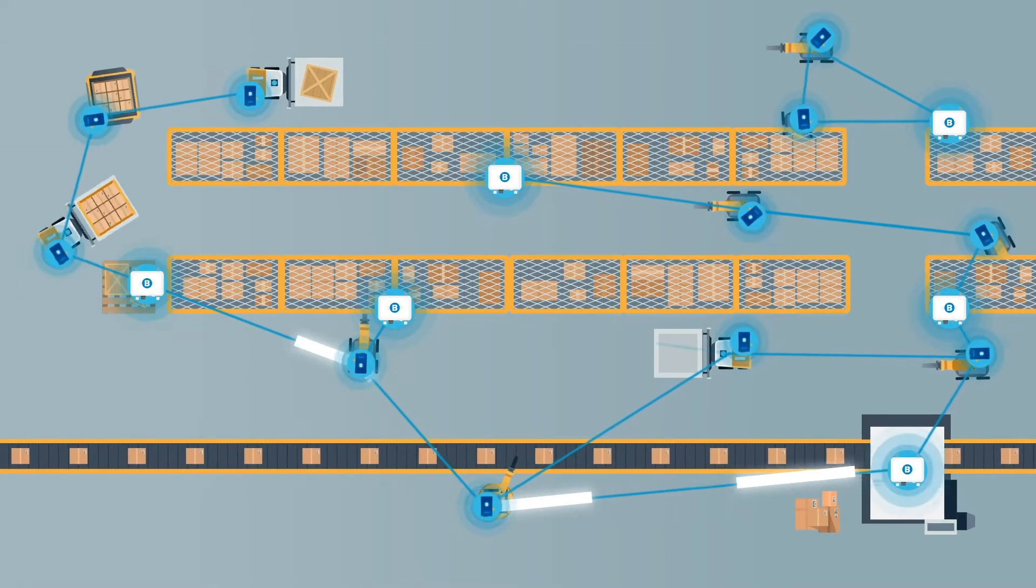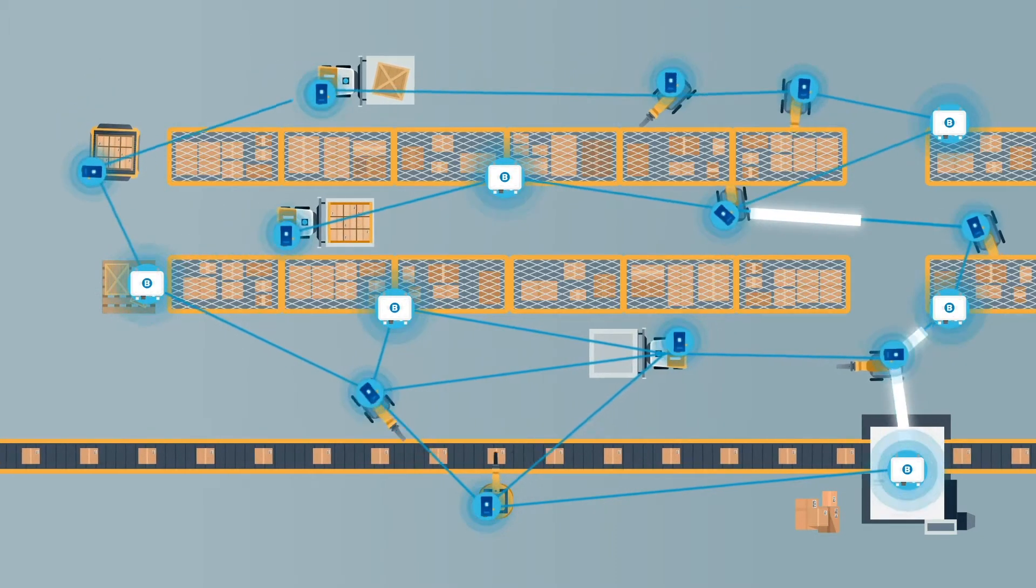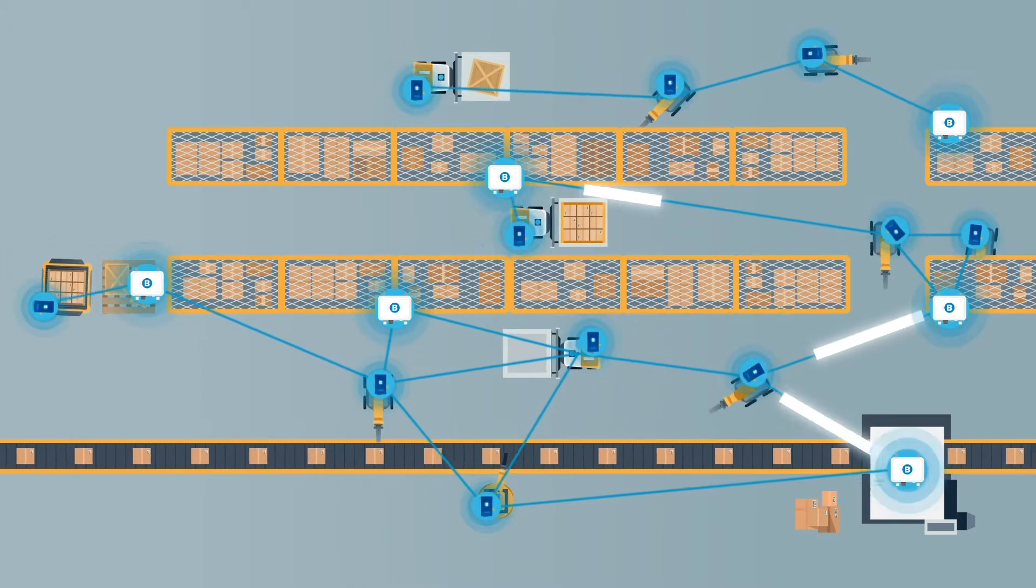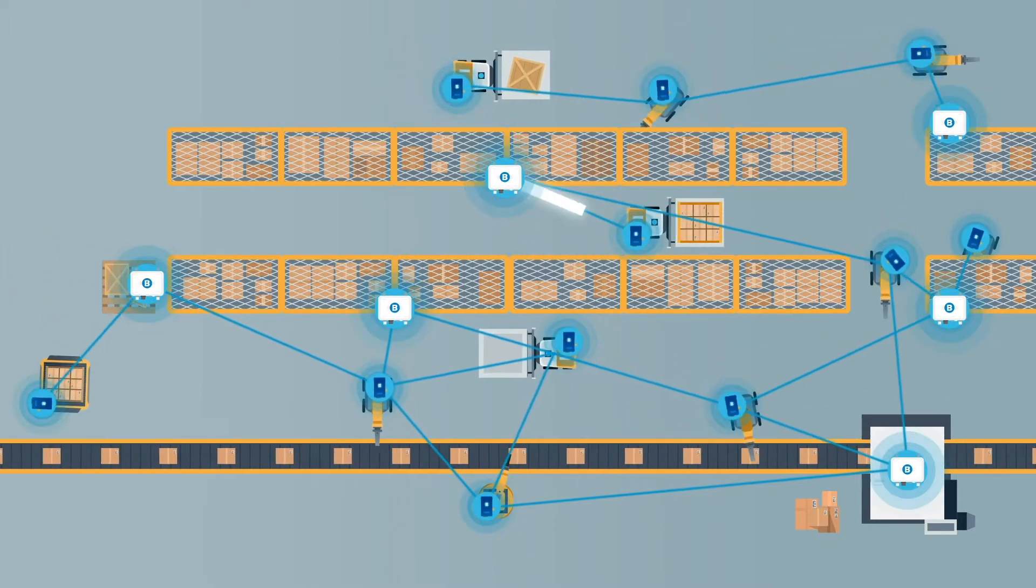If a path becomes blocked or interference is sensed, InstaMesh will automatically route traffic via the next best available path, maintaining mission-critical connectivity.